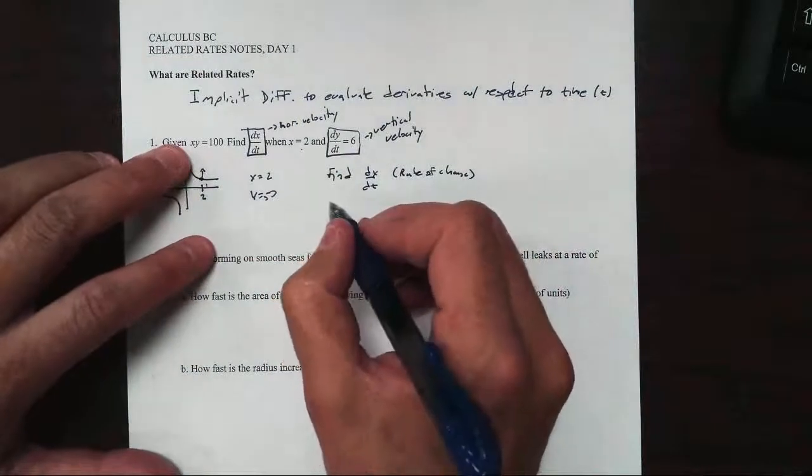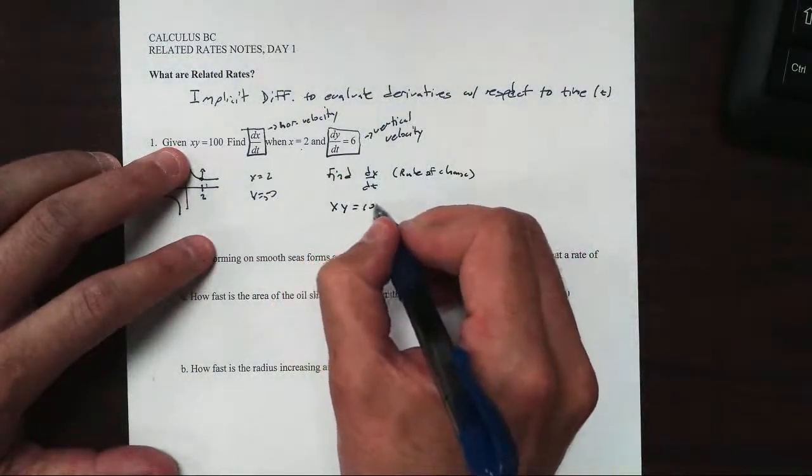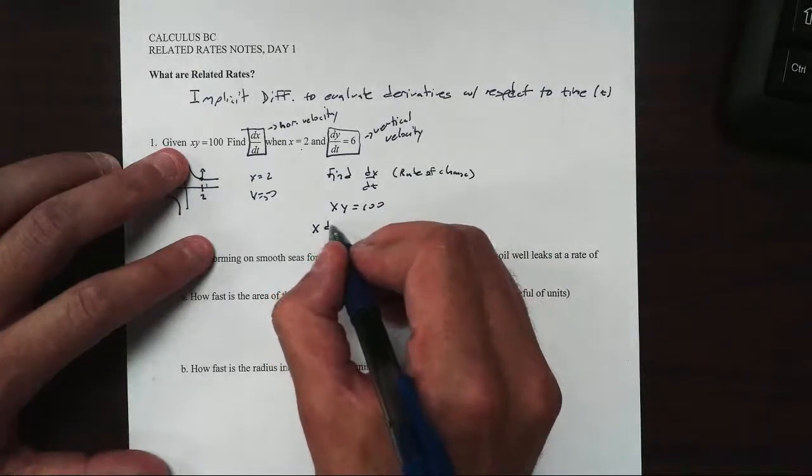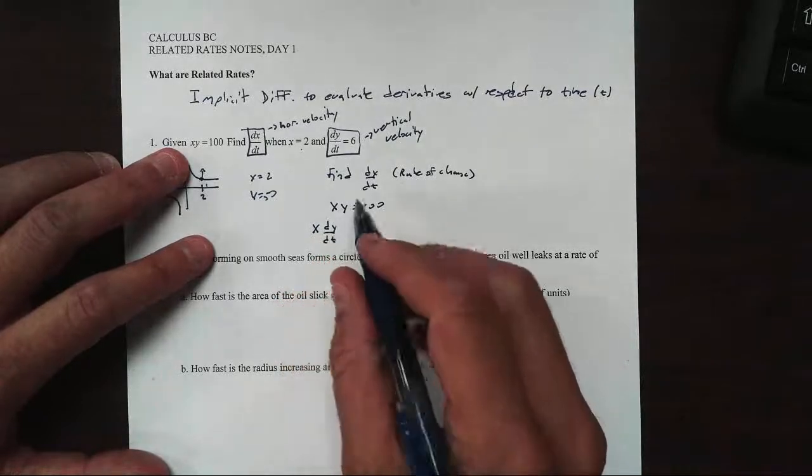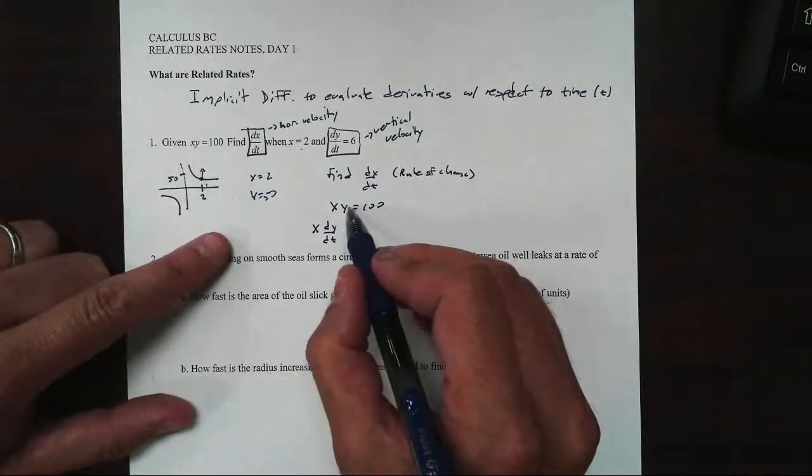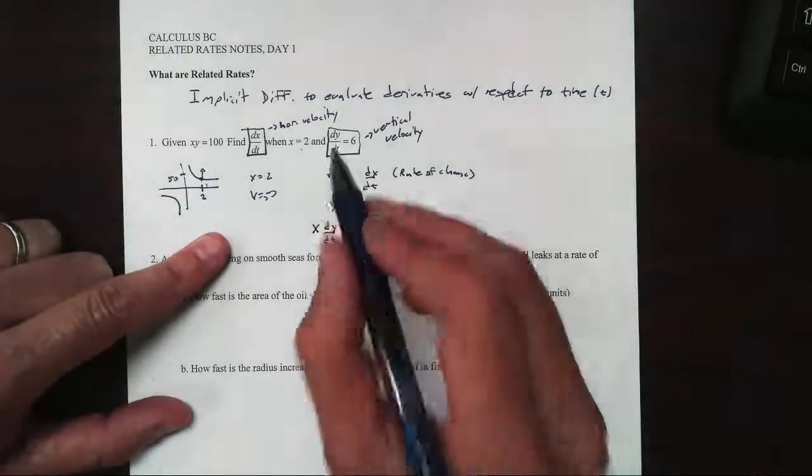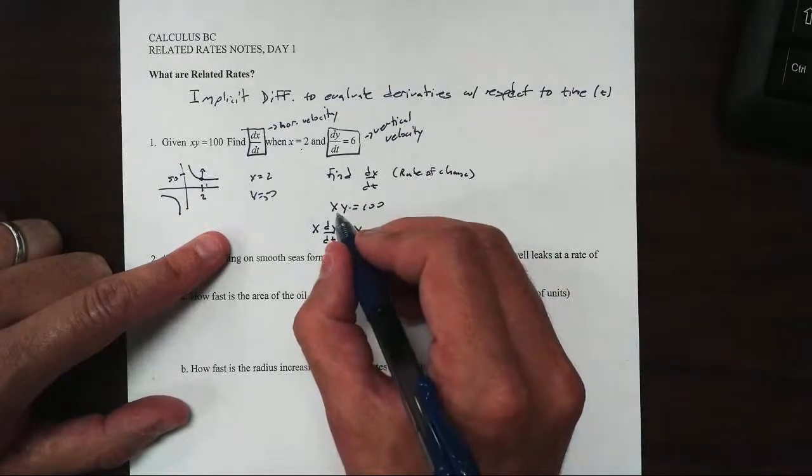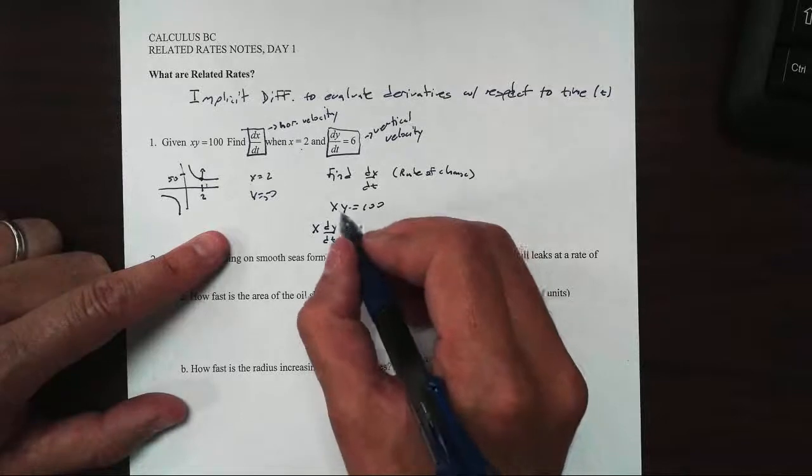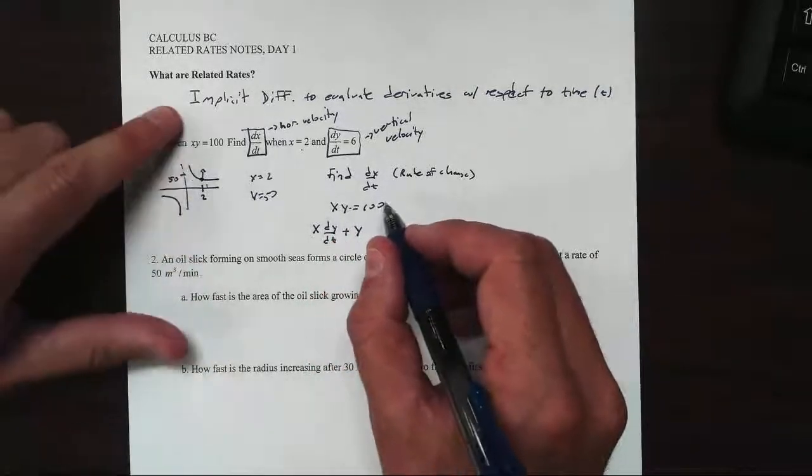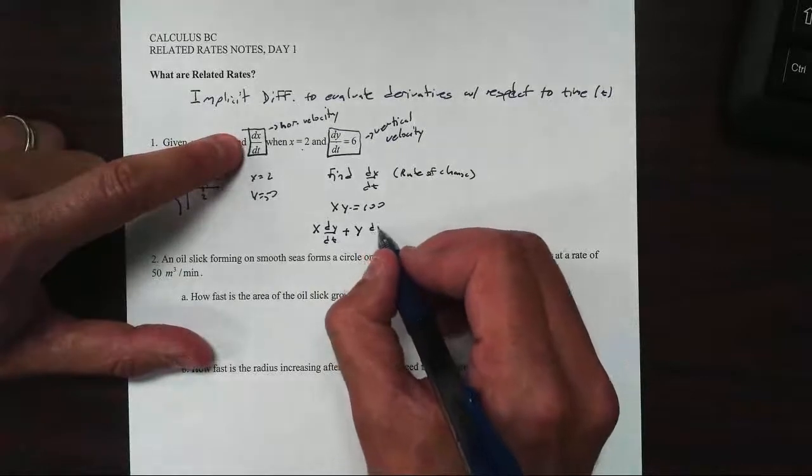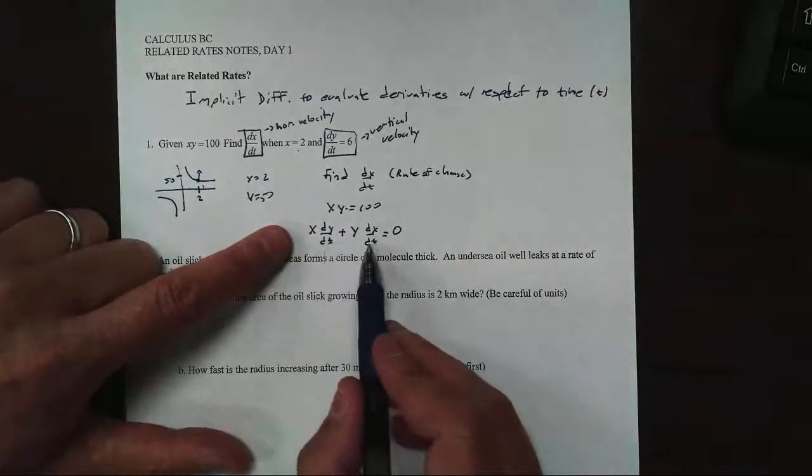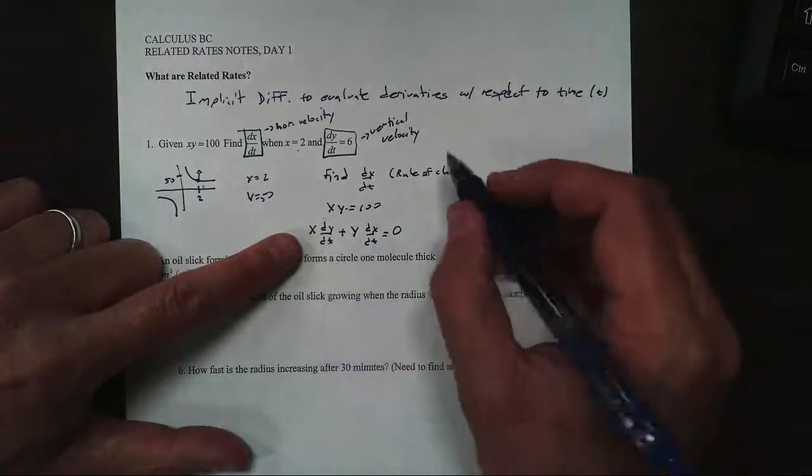Taking the derivative, we're going to use our product rule. I have x times y equals 100. Take the first, x, times the derivative of the second, dy/dt. Why do I use dy/dt? Because I'm looking for the change in y with respect to time. Plus the second, y, times the derivative of the first. This time we're taking the derivative with respect to time, so this becomes dx/dt equals zero. It's implicit differentiation; we're just choosing a different variable.